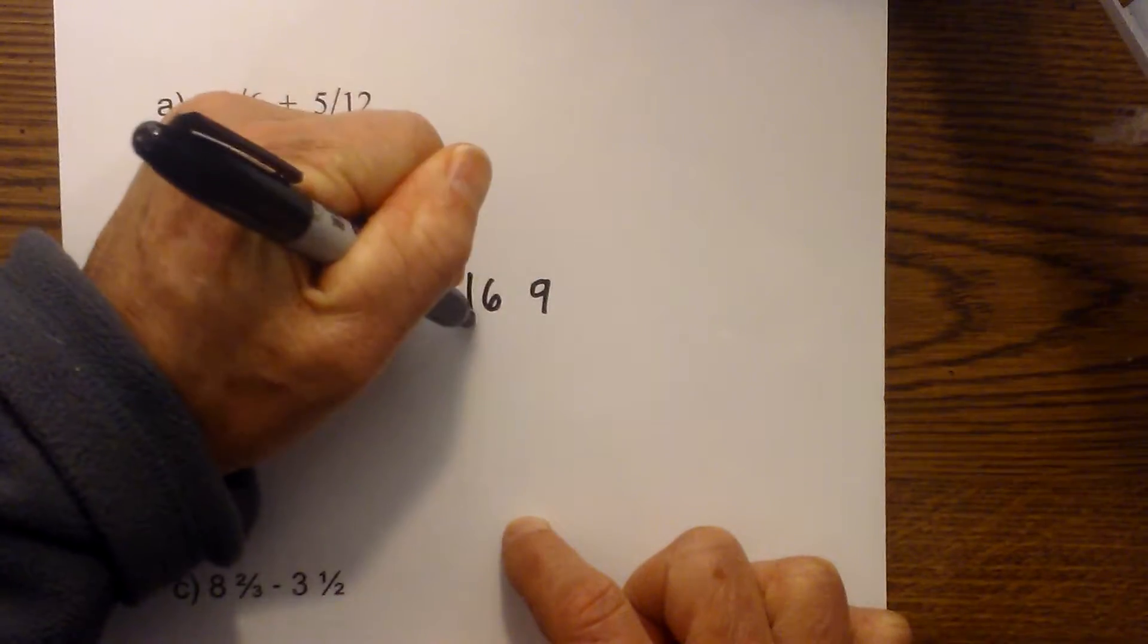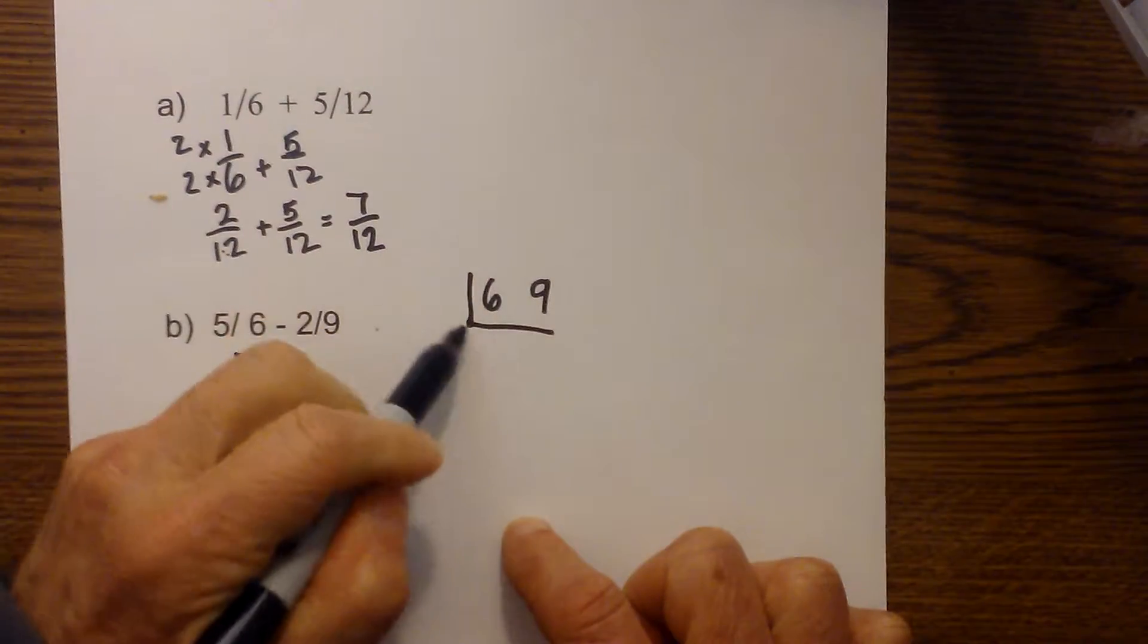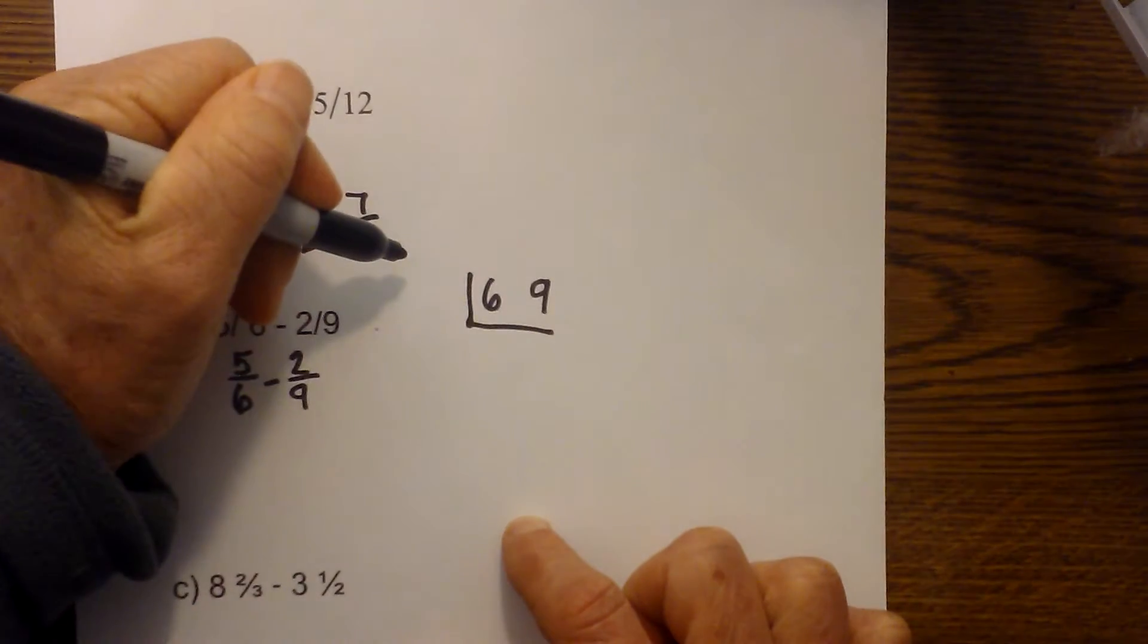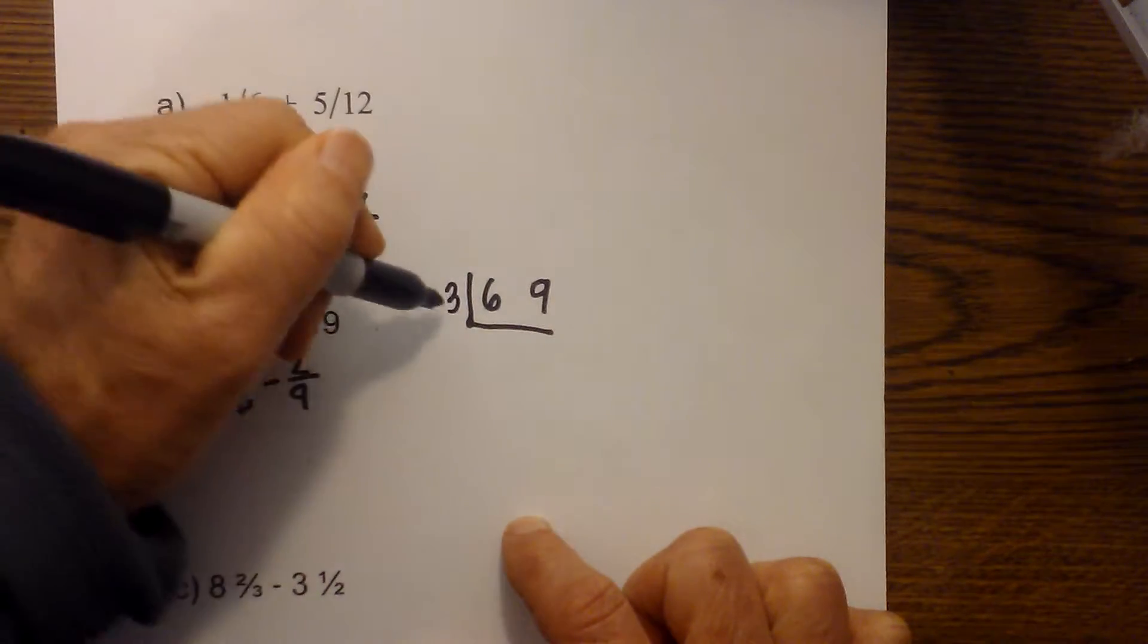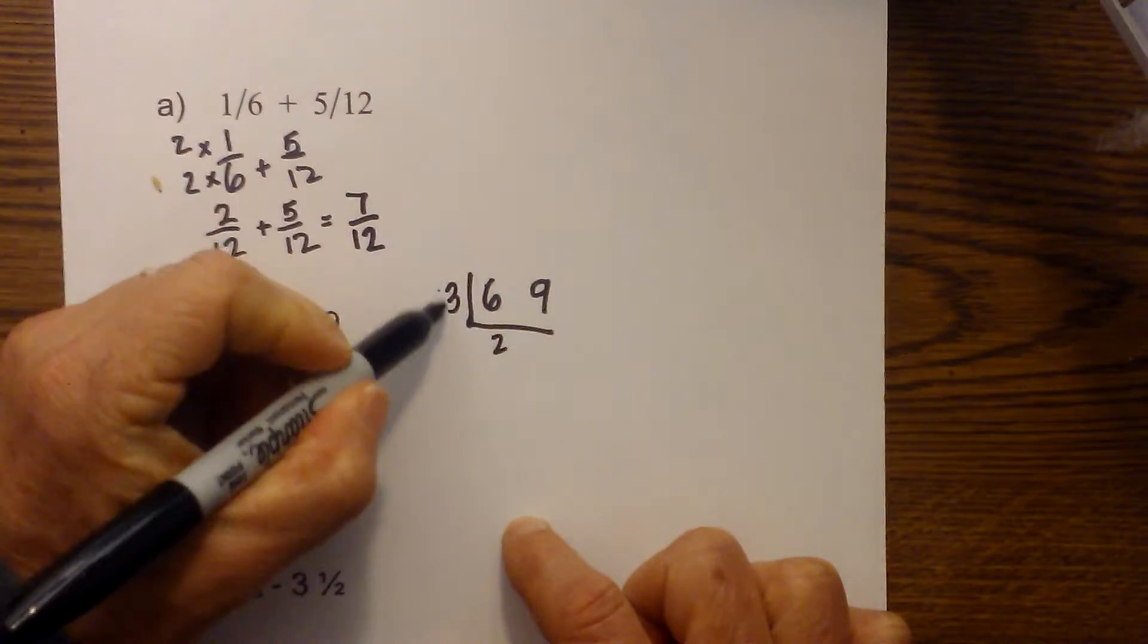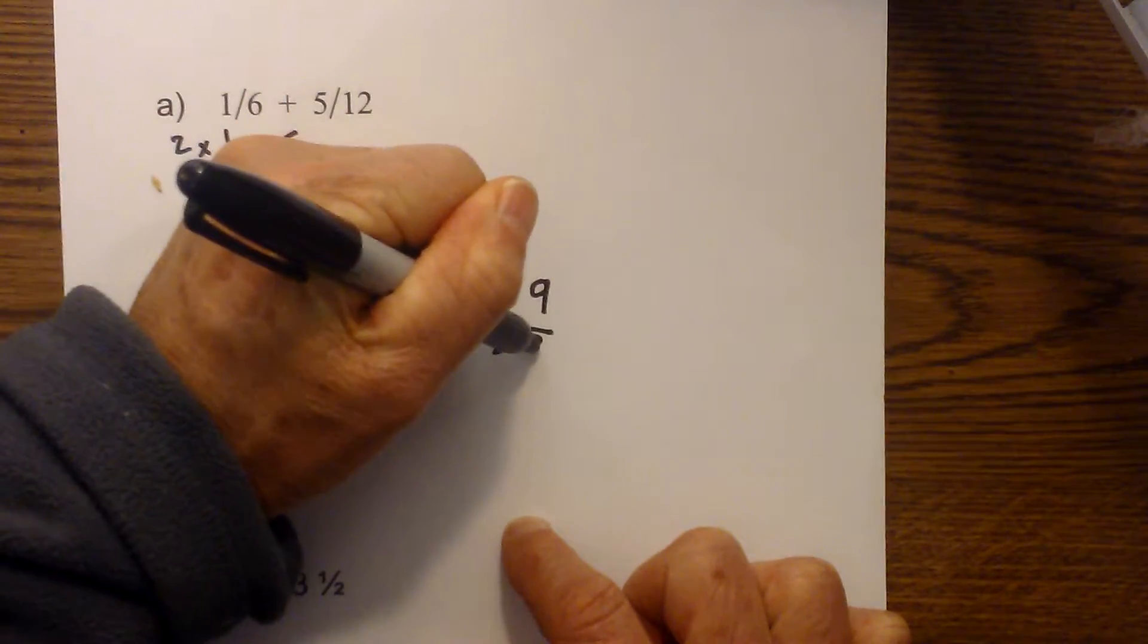But basically, you write the two numbers like this. Draw an L shape underneath. Find a number that divides into both of these. And I know that three will divide into them. Three will go into six two times. Three will go into nine three times.